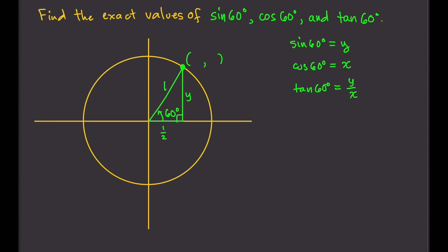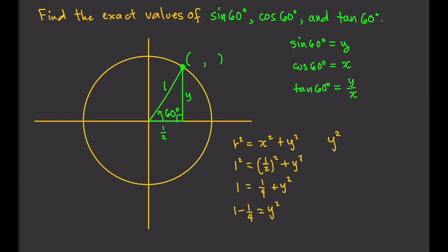This is just a property of right triangles from geometry. Since x is 1 half and the hypotenuse is 1, we can solve for y using the Pythagorean theorem: r² = x² + y². r is 1, so we have 1² = (1/2)² + y². That gives us 1 = 1/4 + y². Subtracting 1/4 from both sides: y² = 3/4. Taking the square root: y equals positive or negative square root of 3 over 2.